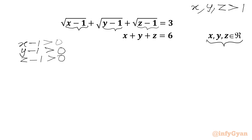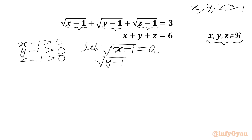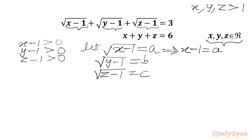Now we are going to use substitution. Let square root of (x minus 1) equal to a, square root of (y minus 1) equal to b, square root of (z minus 1) equal to c. After squaring both sides we can write: x minus 1 equals a squared, y minus 1 equals b squared, z minus 1 equals c squared.